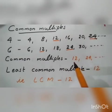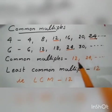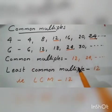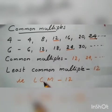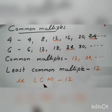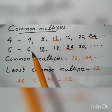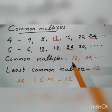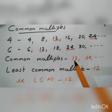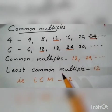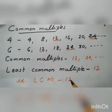The least multiple, or smallest common multiple, is called the least common multiple. The least common multiple is 12. LCM stands for least common multiple. The LCM of 4 and 6 is 12. The common multiples of 4 and 6 are 12, 24, and so on, and 12 is the least — so the least common multiple, or LCM, of 4 and 6 is 12.